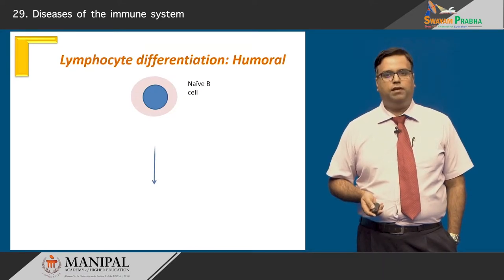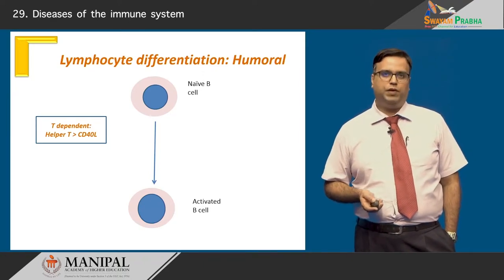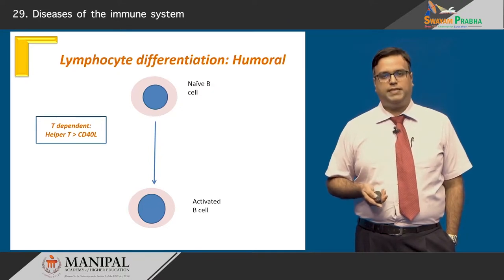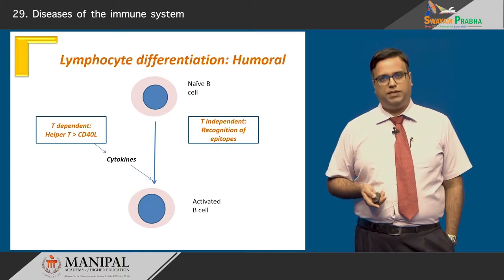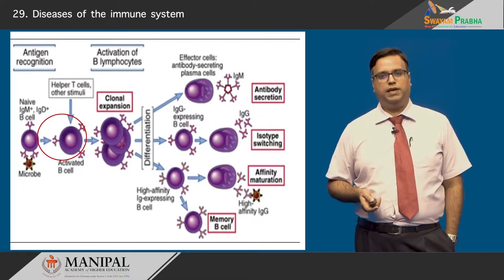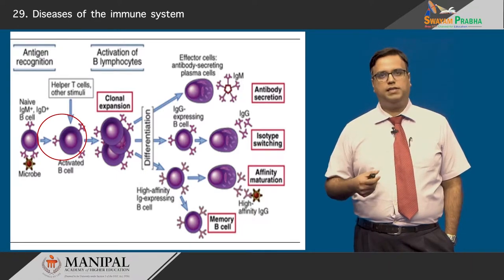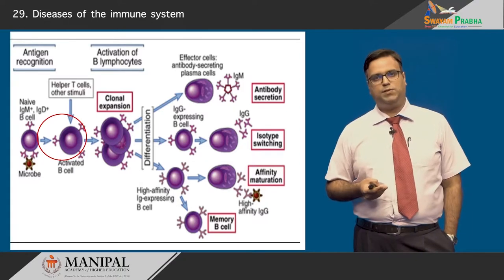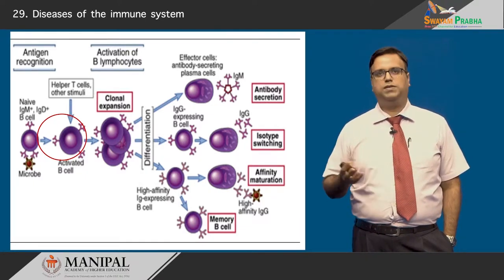Lymphocyte differentiation from a naive B cell to an activated B cell can be of two types. It can be a T-dependent mechanism where T cells provide a supporting role, secreting CD40 and CD40 ligands which in conjunction with cytokines cause B cell activation. The other mechanism is T-independent, where recognition of epitopes alone transforms lymphocytes from a naive to an activated state. Once lymphocytes are activated, there is a clonal expansion — their numbers increase and consequently their products increase.